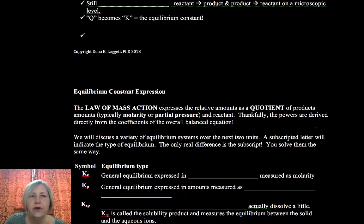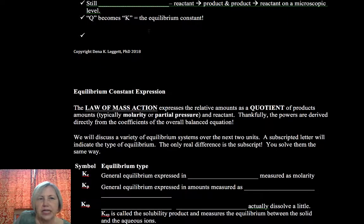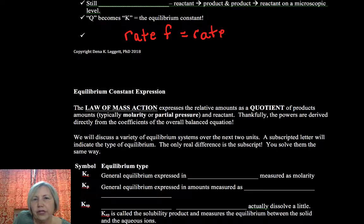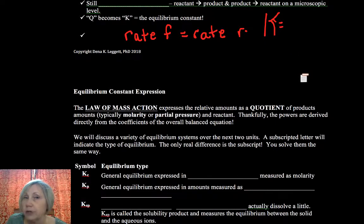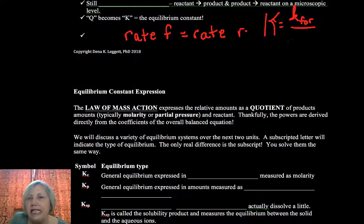And at that point, what we find is that the rate forward is equal to the rate reverse. So K forward is equal to K reverse. And I need a little bit more room to show you this. So my rate in the forward direction is equal to my rate in the reverse direction. So it appears to have stopped.